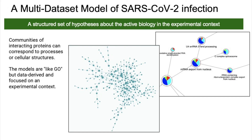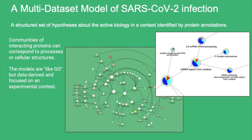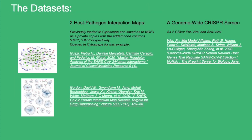And now we come full circle back to that hierarchical model. These models are in the same lineage as the networks that result from analyses in apps like Bingo. These are multi-scale clustering algorithms, often called now community detection, and the result is like GO but it is based on data, not human curation. You can think of the model as a structured set of hypotheses, focused on the biology that is active in the context of your data. Here are the datasets we'll be using in our example: two host-pathogen interaction maps and a genome-wide CRISPR screen.